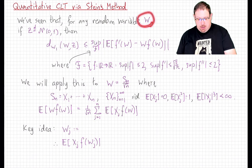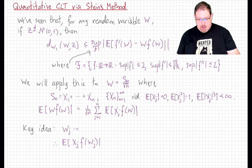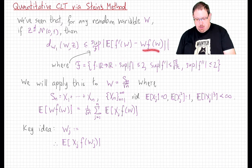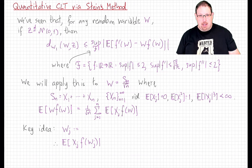We're going to use that method today to prove a quantitative version of the central limit theorem. For any random variable w, if z is a standard normal random variable, the Wasserstein distance between w and z is bounded by the supremum of the expected value of f'(w) - wf(w) in absolute value, where the supremum is over real-valued functions bounded by 2, with derivative bounded by √(2/π) and second derivative bounded by 2.